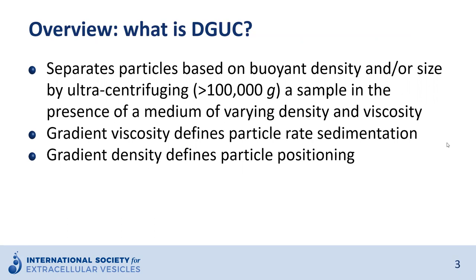Density gradient ultracentrifugation separates particles based on buoyant density and/or size, depending upon the setup of the density gradient. Density gradients are prepared by layering dilutions of a density medium of varying density and viscosity from the bottom to the top in an ultracentrifuge tube. Density media typically used to prepare gradients are iodixanol and sucrose. The viscosity of the gradient defines particle sedimentation rate.